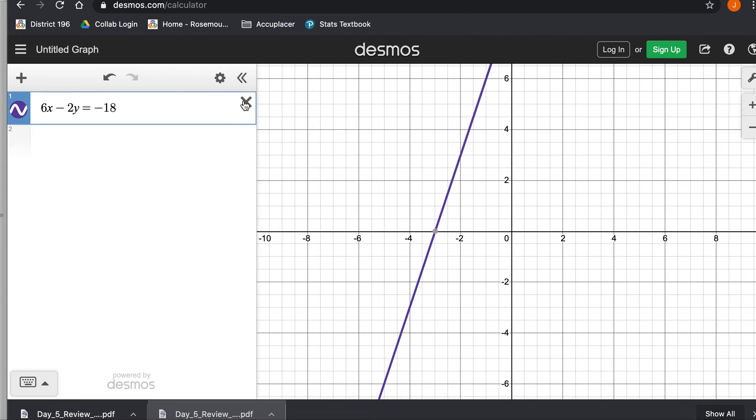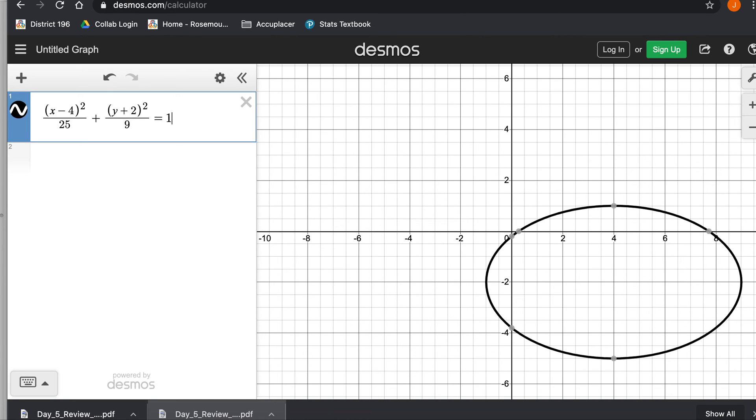And then we're going to head over to Desmos, and we're going to type them in just the way we saw them. And once again, if you were using a regular old-fashioned calculator, this would be way more work, because you'd have to solve it for y. You'd end up with plus or minus. It would be kind of a mess. So I'm going to type this in: x minus 4 squared over 25 plus, and then parenthesis, y plus 2 squared over 9 equals 1. And there we have an oval or an ellipse is what we call that in math. And then we have y equals negative x minus 4 squared plus 1. So what do we have here? We have a parabola, the red thing, and an ellipse, the black thing.